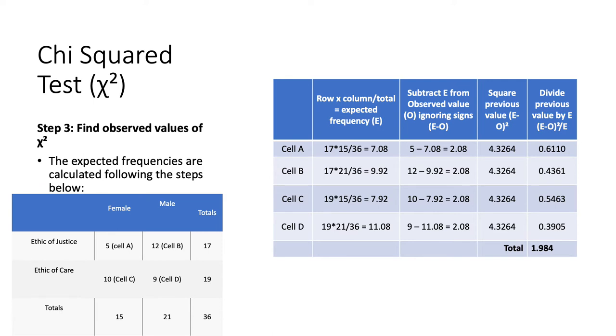And then what we do is we find the calculated value. Now, this is probably, just from looking at it, the most complicated one to test, to gain the calculated value from. But I'm going to break it up for you and hopefully you will understand. So, firstly, you can see that each cell has been labelled A, B, C and D. And this is represented here. So, let's start with cell A and find out where they've got these numbers from. So, all you do for cell A, which is this one here, is you look at the total number of people that put ethic of justice. And then you find how many females. And then you just times these two numbers together. So, 17 times 15. And you divide it by 36 because that's the total number of participants. Once you've got this value, this is your expected frequency value. And it's 7.08 in this case.